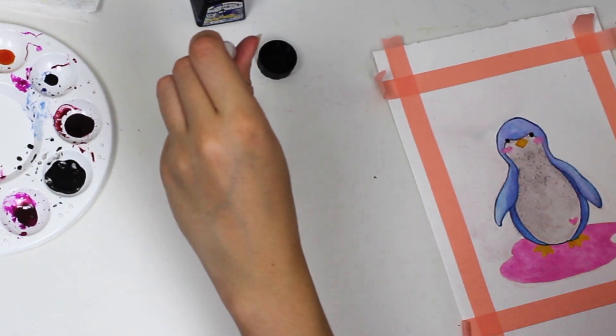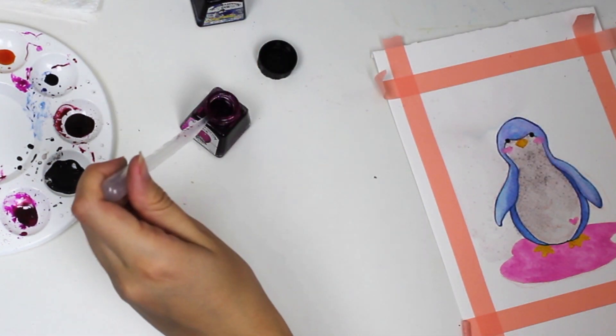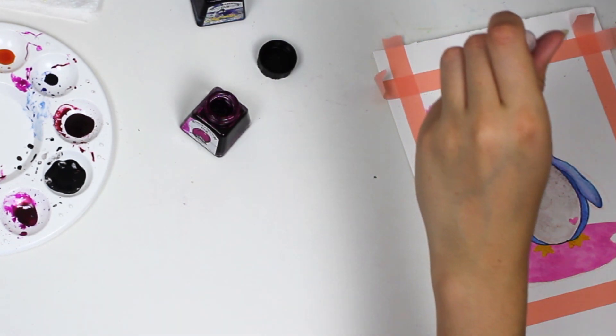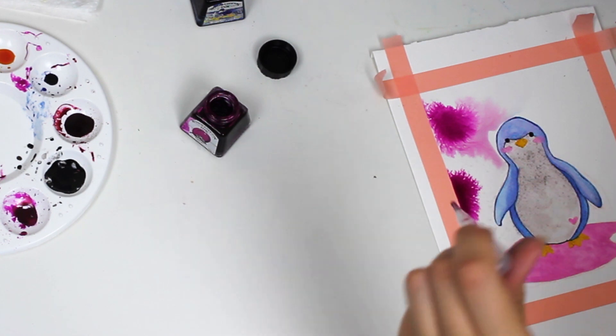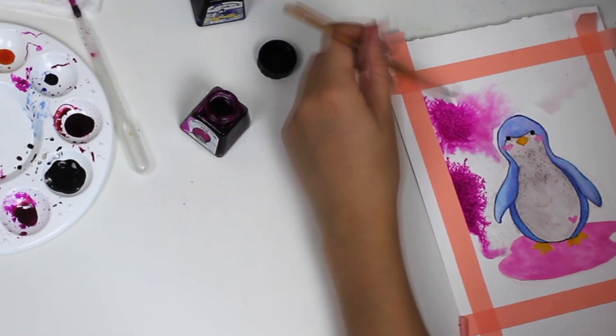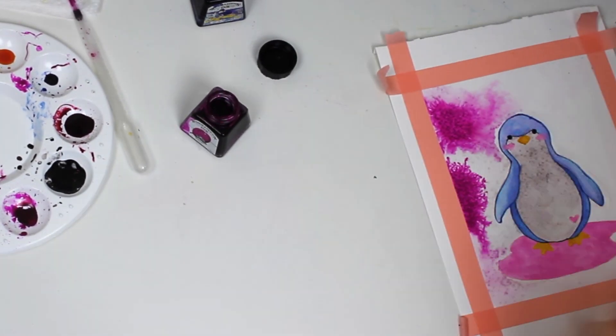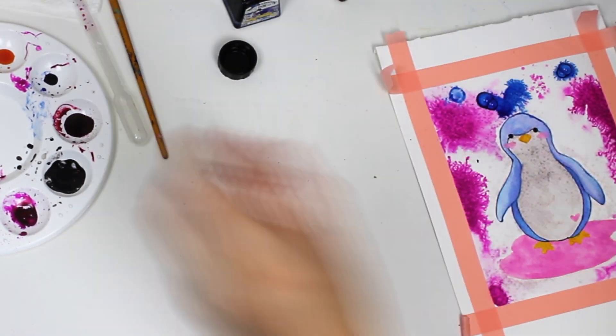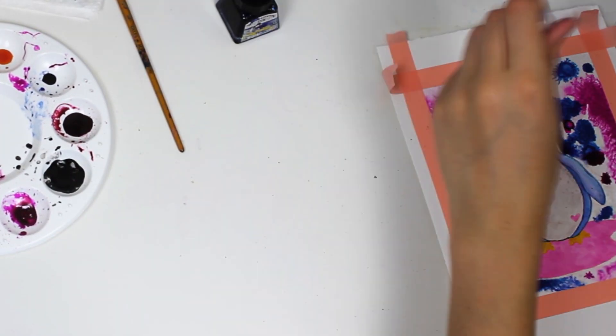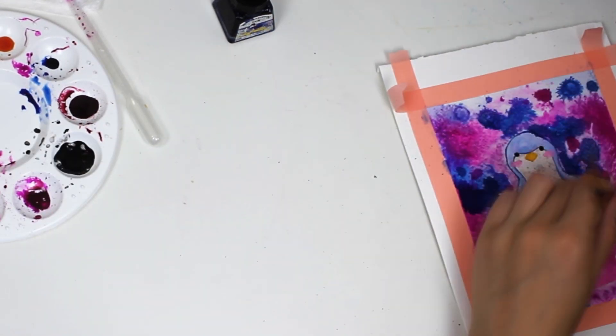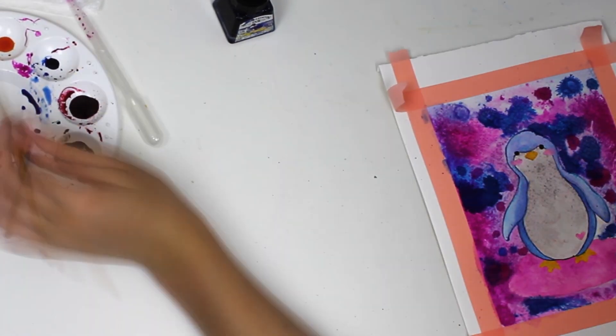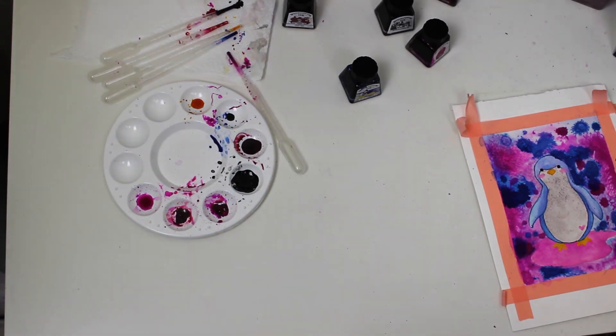As you can see here, I decided to put water on the entirety of the background behind the penguin, and then I used my pipettes to drop some ink right into the background under the white space. This created a really nice tie-dye effect. I should have waited a little bit longer for the penguin to dry as it did kind of spread a little bit into his head, but other than that I'm actually really happy with how the effect did come out.